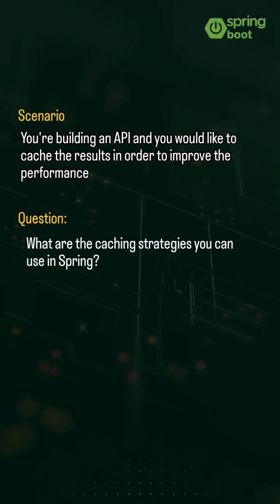You're building an API and you would like to cache the results in order to improve the performance. What are the caching strategies you can use in Spring? Comment the caching strategies that you used in your projects.